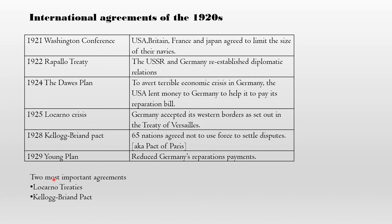Of all these agreements in the League of Nations era, there were two most important ones you need to learn: first, the Locarno Treaties, and second, the Kellogg-Briand Pact. In the Locarno Treaties, Germany accepted the borders discussed in the Treaty of Versailles. In the Kellogg-Briand Pact, 65 countries agreed not to use force — meaning they will not invade other countries or use military action to settle disputes. Disputes mean problems.